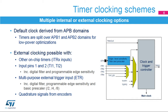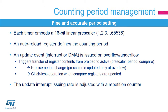The quadrature signals from an encoder can be processed to provide a clock and a counting direction. Each timer embeds a linear clock prescaler, which allows you to divide the clock by any integer between 1 and 65536, precisely adjusting the counting pace. For instance, a division by 80 will yield a precise 1 MHz counting rate when the APB clock is 80 MHz. The auto-reload register defines the counting period. An update event is issued when the counter underflows or overflows and a new period starts, triggering an interrupt or DMA request useful for real-time control.